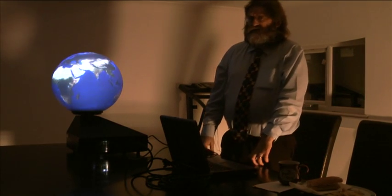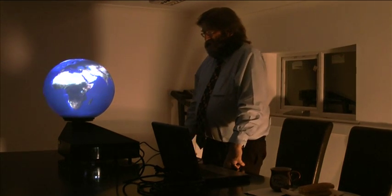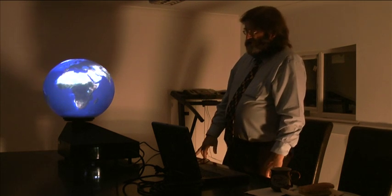Every map you ever see of the Earth is distorted in one way or another. The only way to have an undistorted view of the Earth is to actually have a spherical representation of it, which is what this allows us to do.